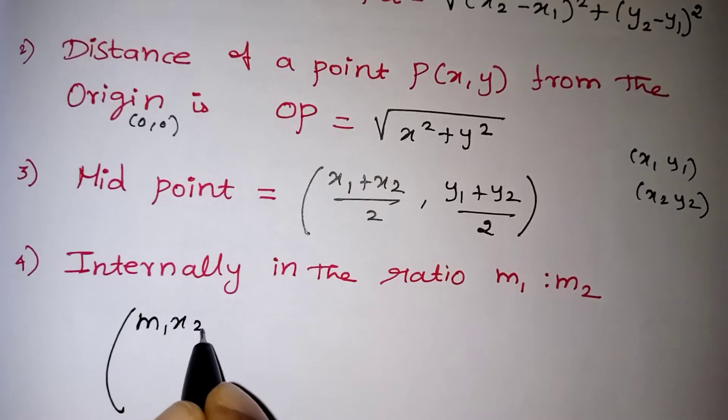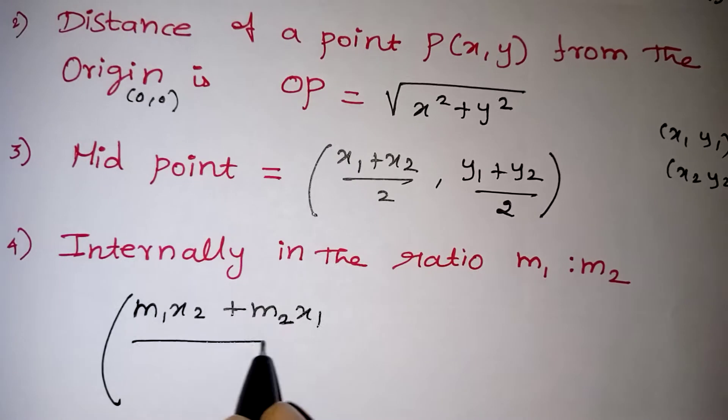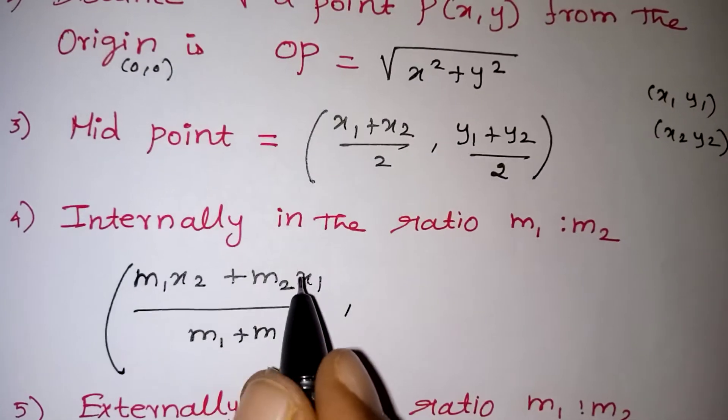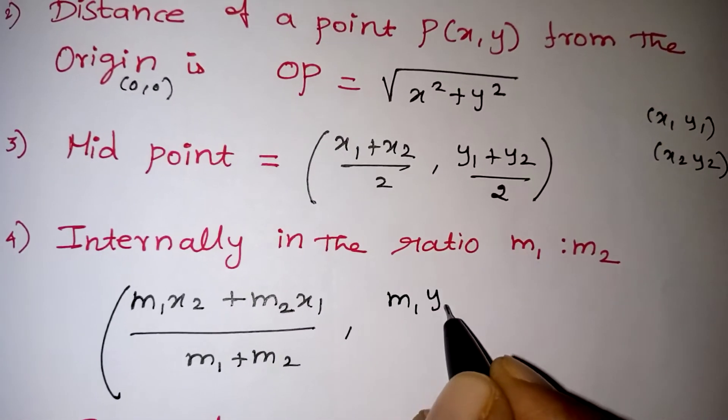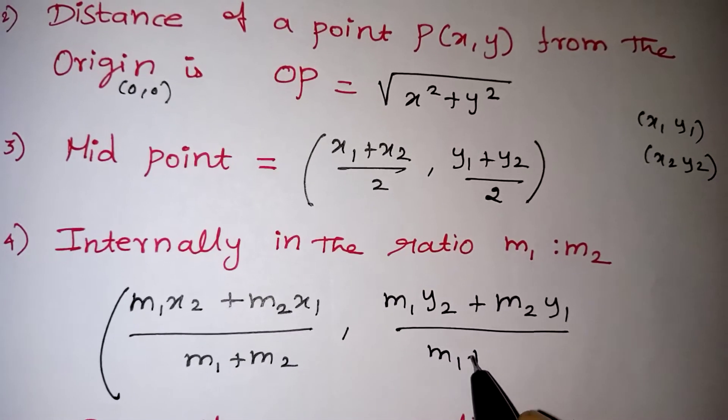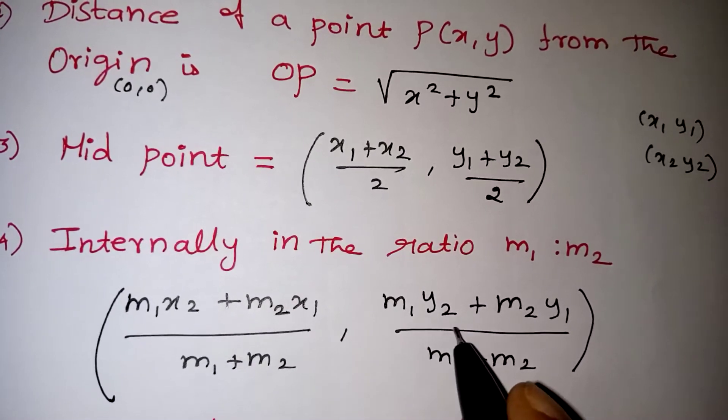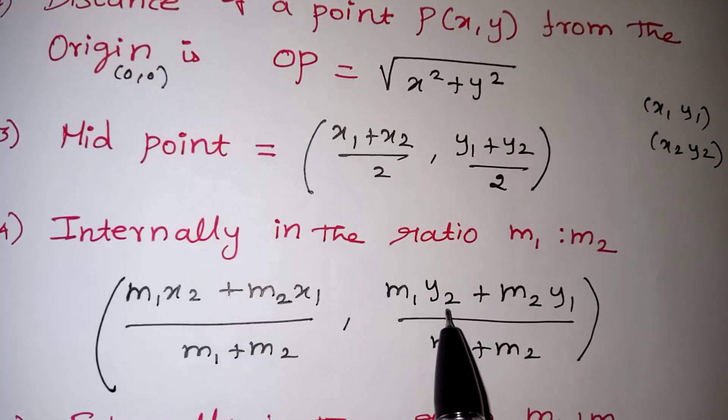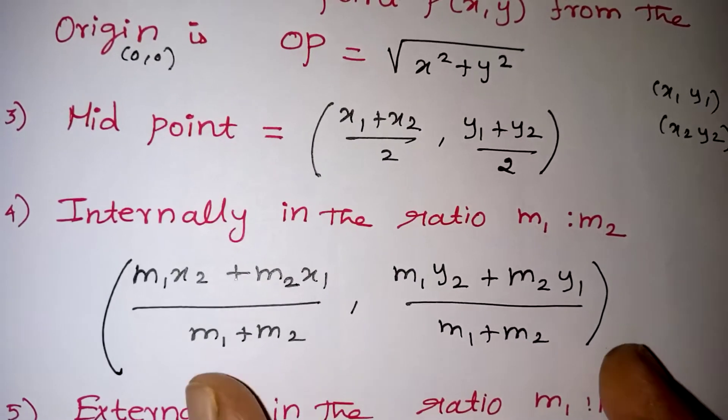So this is m1 x2 plus m2 x1 by m1 plus m2 comma, here everything should be in terms of x. Next point everything will be in terms of y. Again, m1 y2 plus m2 y1 by m1 plus m2. We can keep it in mind very easily. Ratio will be added in the denominator, in numerator also. But here you have to take the number, m1 if you are taking y1 you should not take. 1, 1 will not come together. So 1 is 1 means the next one is 2. Like that we have to write it. That is the correct formula for internally.